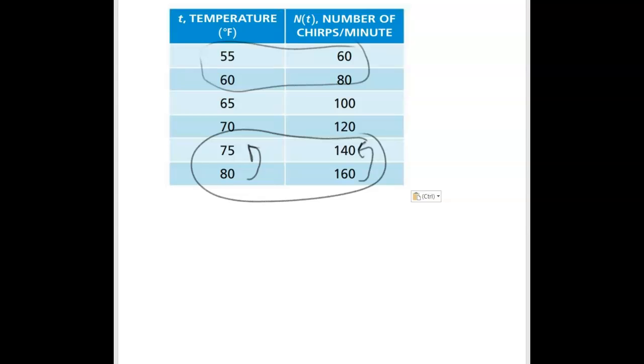The change in the output would be 160 minus 140 over 80 minus 75. I get 20 divided by 5. Remember, fractions are just division. When I do that, or just because I know 20 divided by 5 is 4, I get a 4. This will be 4 chirps per minute per degree F. So far, this looks like my function is linear.